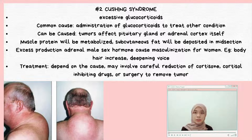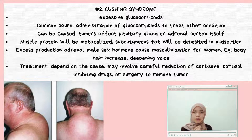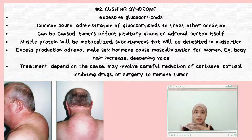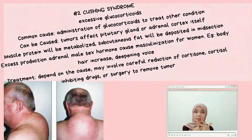Treatment for Cushing's syndrome includes: first, careful reduction of cortisol; second, cortisol-inhibiting drugs; and third, surgery to remove the tumor.